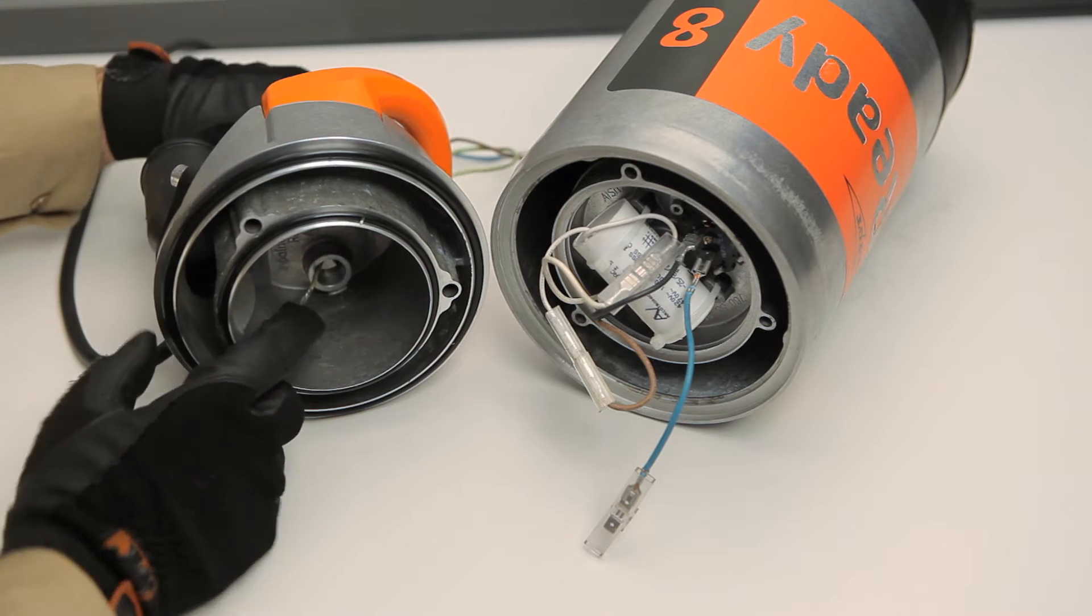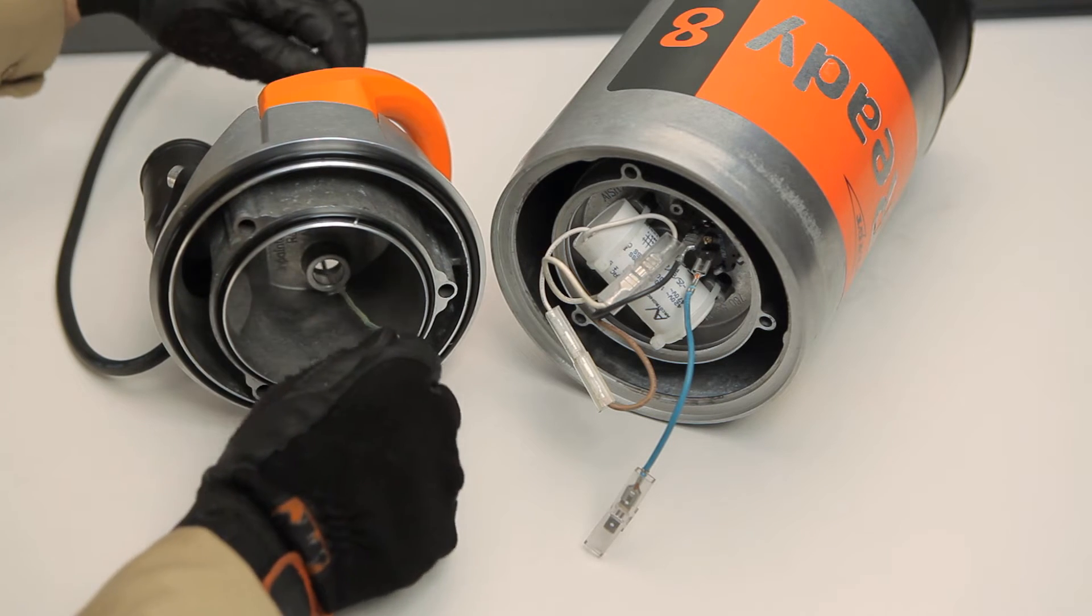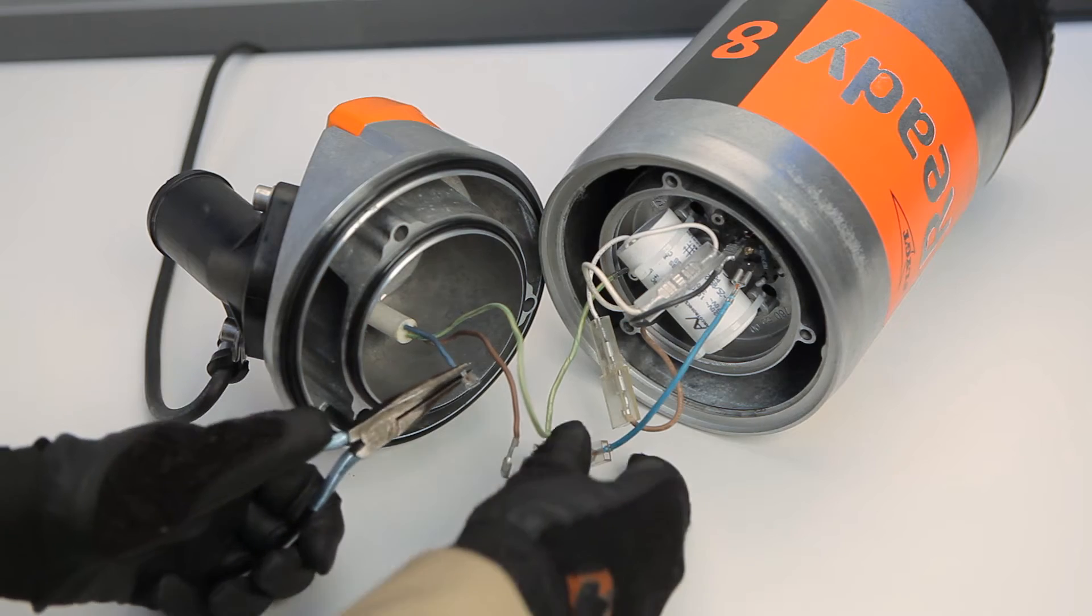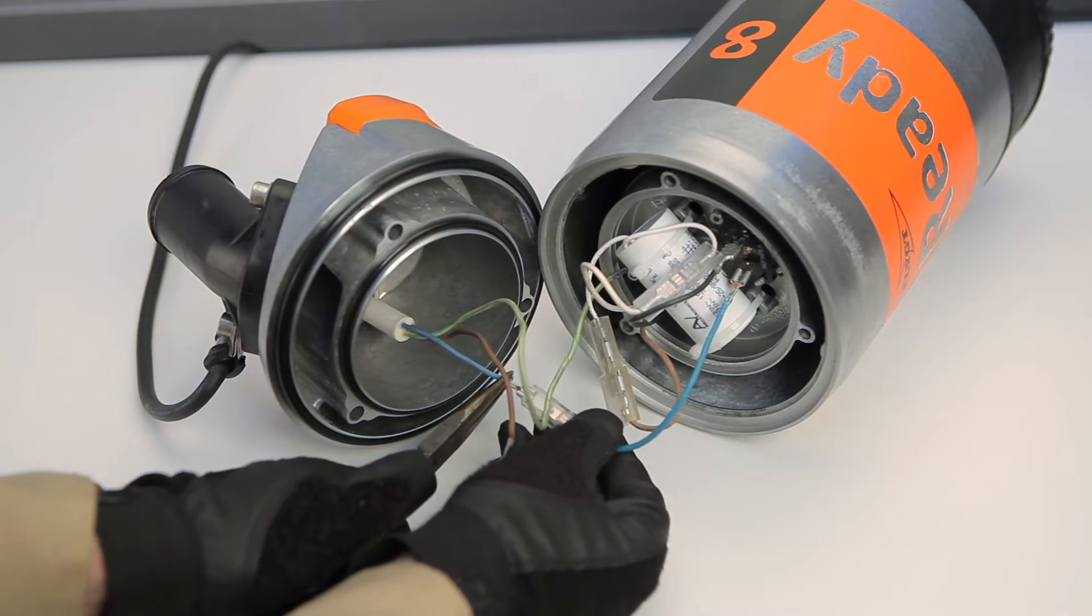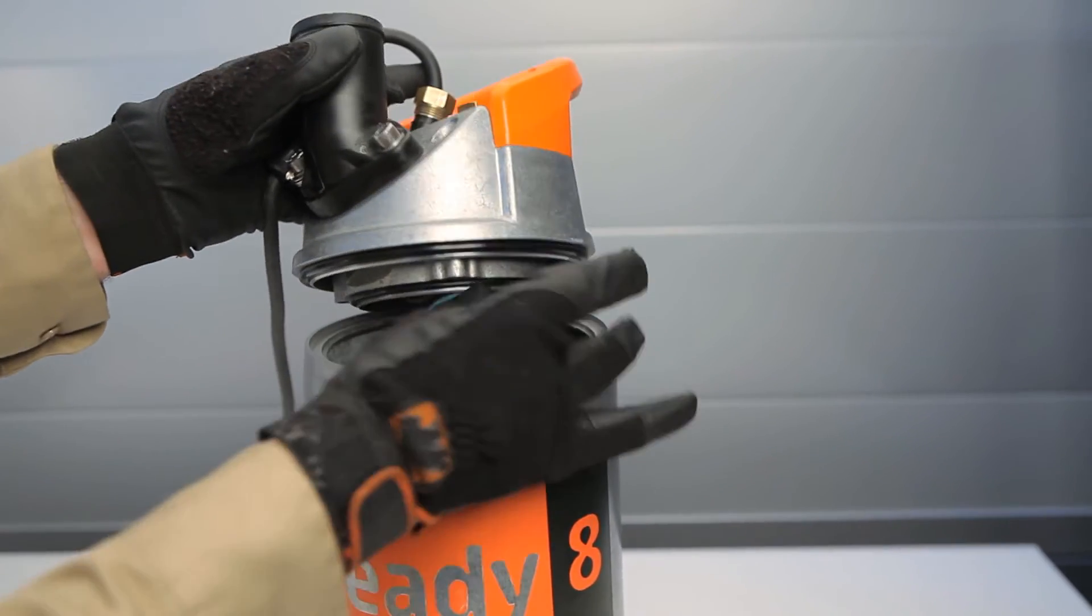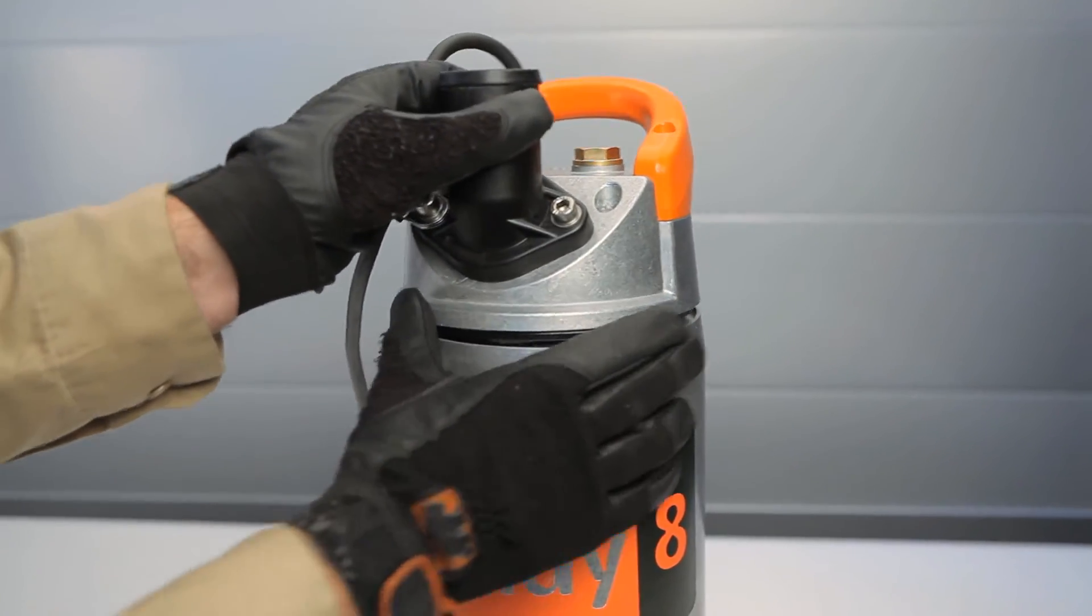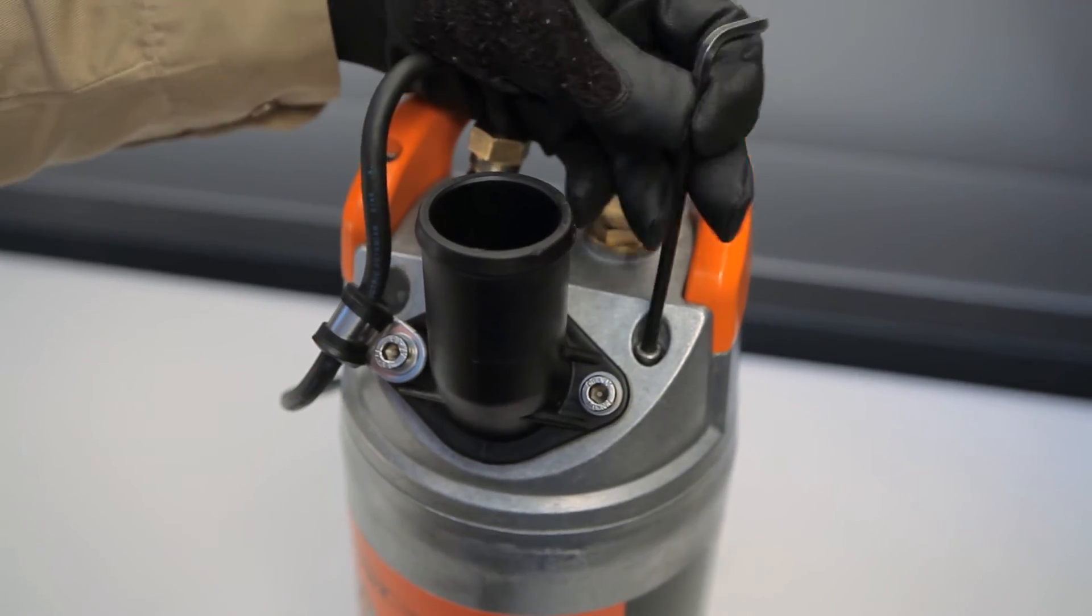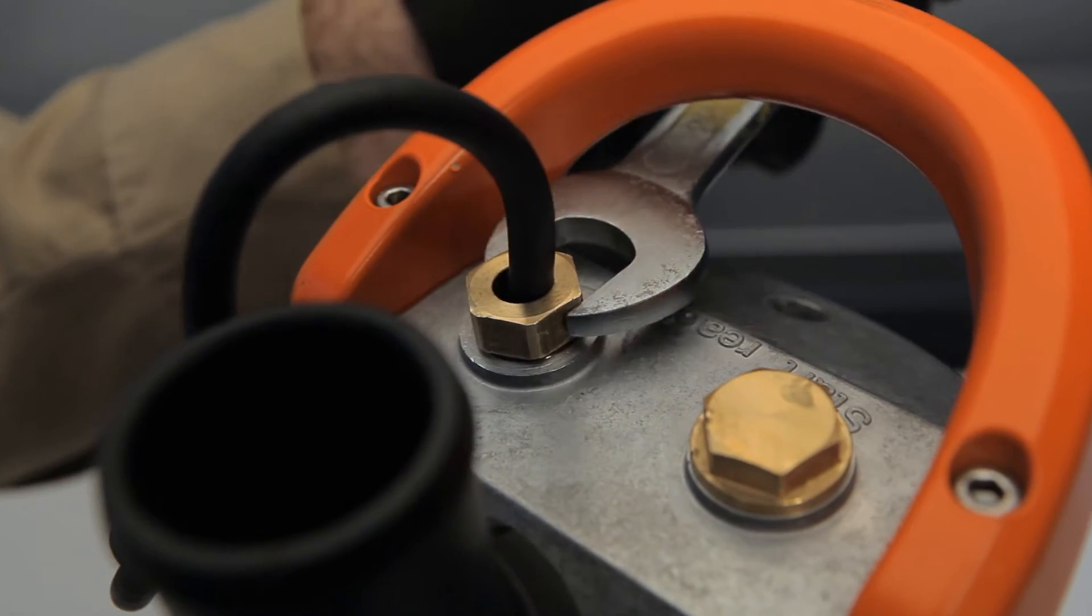Then, you simply reverse the steps. Pull the new cable unit through and connect to the terminals. Reinstall the top cover. Tighten the cover bolts and gland nut, and you're ready for action.